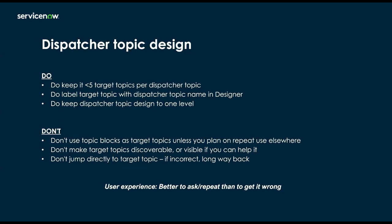You want to make your dispatcher topic discoverable and your target topics not discoverable — you don't even want them visible on the 'show me everything' topic list. You can if you want, but if you really want to clean up that list, just don't make them visible. And finally, don't jump directly to a target topic. If you jump to the wrong target topic, it's a very bad experience. The overall message is it's better UX to repeat and confirm with the user where they want to go rather than get it wrong.